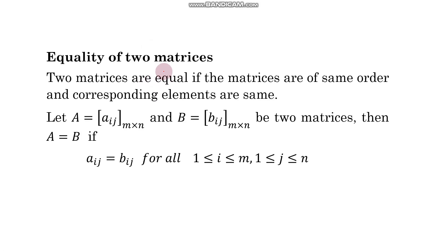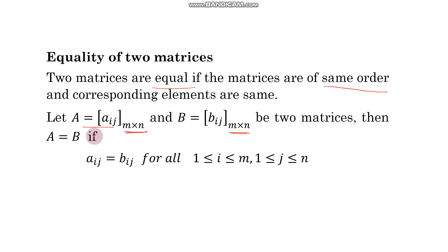Let us start with equality of two matrices. Two matrices are equal if the matrices are of the same order — that is the first condition — and the corresponding elements are the same. If we take A equal to aij of order m by n and B equal to bij of order m by n, the first condition is automatically satisfied. We can write A equal to B if aij equals bij for all i from 1 to m and j from 1 to n. So in this way, you can define equality of two matrices.